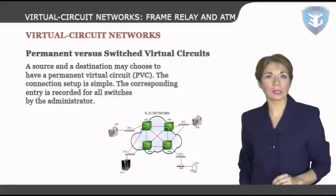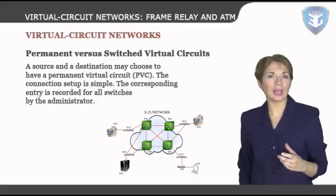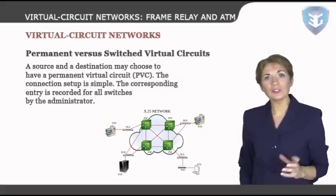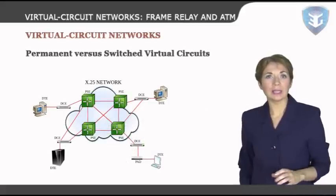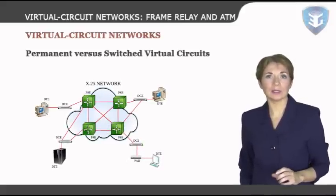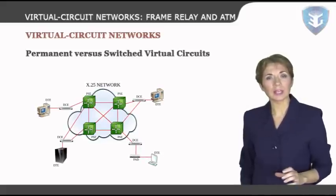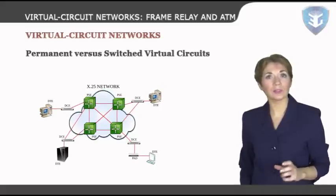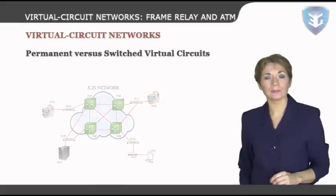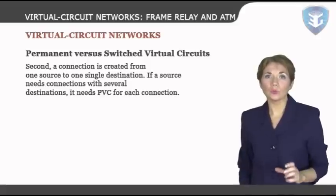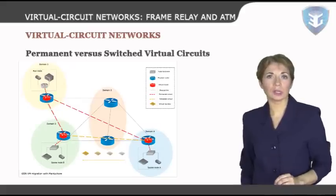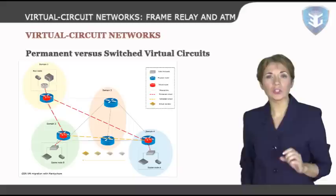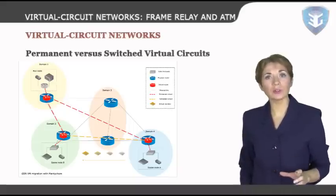Regarding permanent versus switched virtual circuits: a source and destination may choose to have a permanent virtual circuit, or PVC. The connection setup is simple — the corresponding entry is recorded for all switches by the administrator. An outgoing DLCI is given to the source, and an incoming DLCI is given to the destination. PVC connections have two drawbacks: they are costly because two parties pay for the connection all the time even when not in use, and a connection is created from one source to one single destination. If a source needs connections with several destinations, it needs a PVC for each. An alternate approach is the switched virtual circuit, or SVC, which creates a temporary, short connection that exists only when data is being transferred between source and destination.